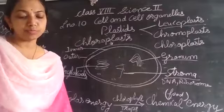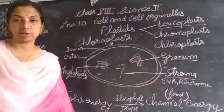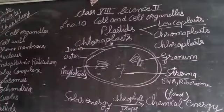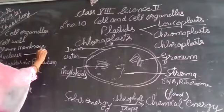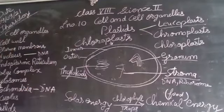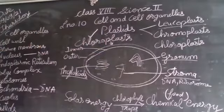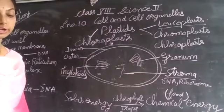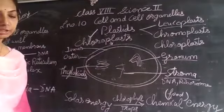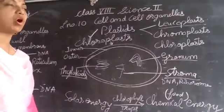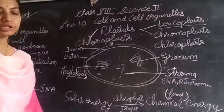Mitochondria and plastids can produce protein as well as replicate themselves, as they have their own DNA and ribosomes. So, the nucleus has DNA, mitochondria have DNA, and chloroplasts also have DNA — these are therefore three cell organelles that possess their own DNA. This means they can replicate themselves and perform protein synthesis.